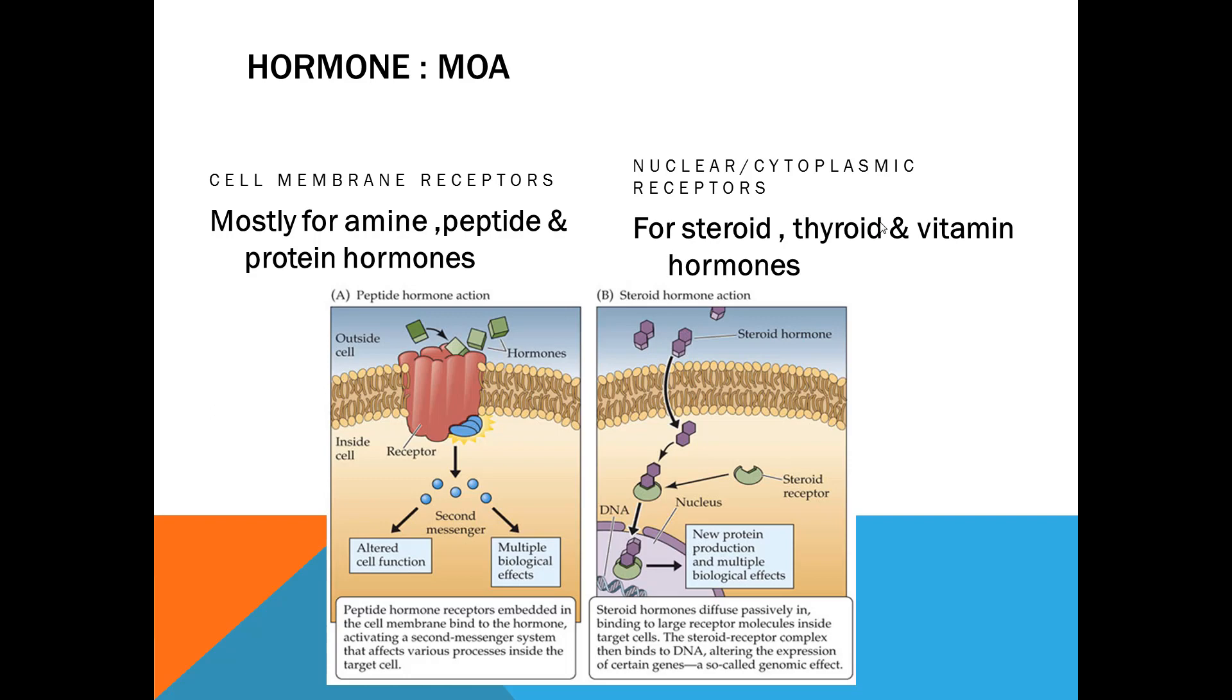Now what is the hormone mechanism of action? There are two types of mechanisms. Amines, peptides, protein hormones like acetylcholine, adrenaline, epinephrine have cell membrane receptors. So the hormone binds to the cell membrane and brings about change in the cell membrane protein receptor. The nuclear cytoplasmic receptors are required for steroid hormones, thyroid hormones, and vitamin hormones. Because steroid, thyroid, and vitamin are lipid soluble, the hormone diffuses into the cell. It binds to a receptor. This hormone receptor complex goes into the nucleus and alters the expression of genes. This is called genomic effect because it is acting on genes.